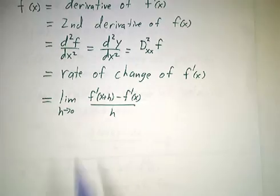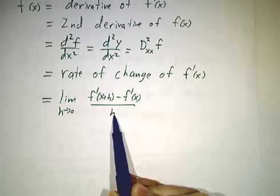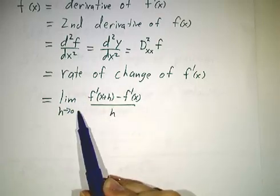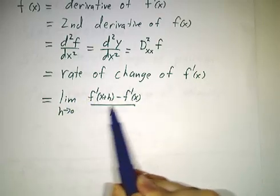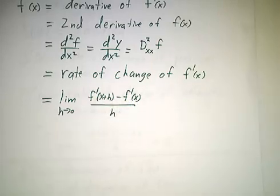And so you compare the value of f prime at nearby points, divide by h, take a limit. It's exactly the same as the definition of the derivative of f, except everywhere that you had an f before, now you've got an f prime.